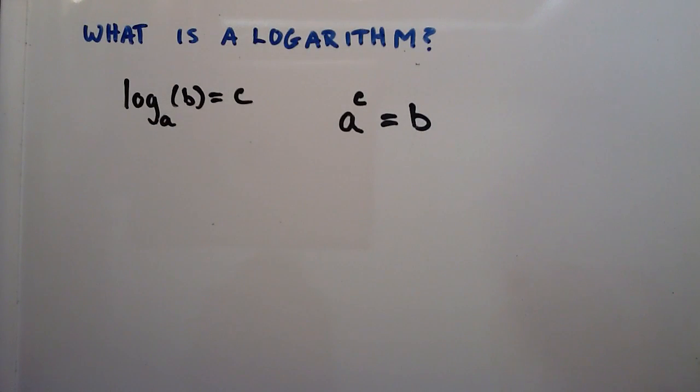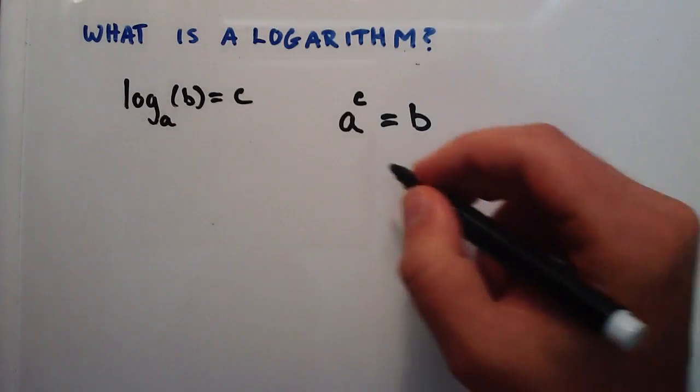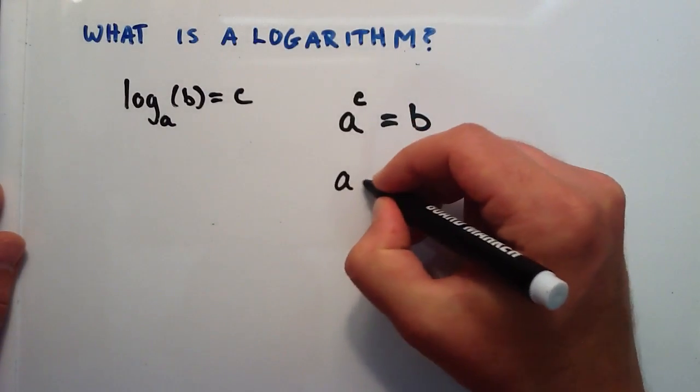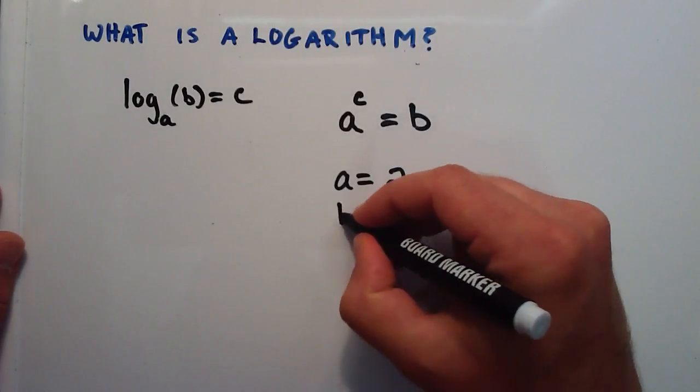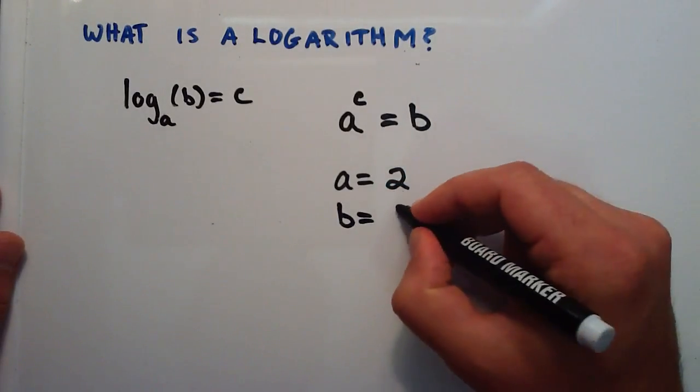Okay, let's give you some numerical examples, and we'll think about this a little more practically. So let's say that our A equals 2, and our B equals 8.